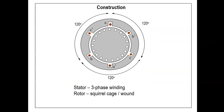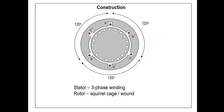Now let's look at the construction of the induction motor. What is shown here is a three-phase induction motor. Like any other rotating machine, it is made up of two parts: the stator, which is the non-moving part, and the rotor, which is the rotating part. The three phases on the stator are labeled A, B, and C, with a separation of 120 degrees between the windings of each phase. The diagram shows a two-pole machine, which means the electrical angle is the same as the mechanical angle.